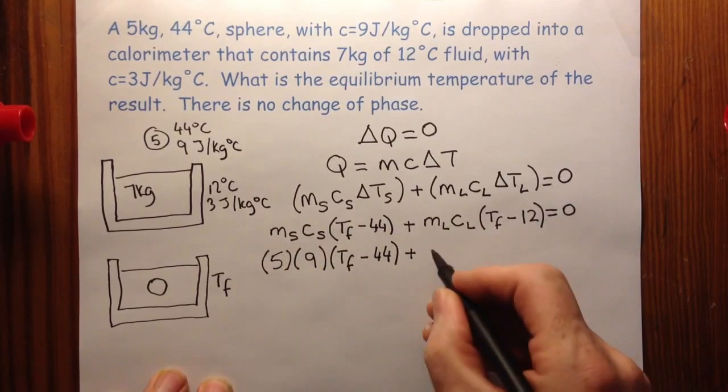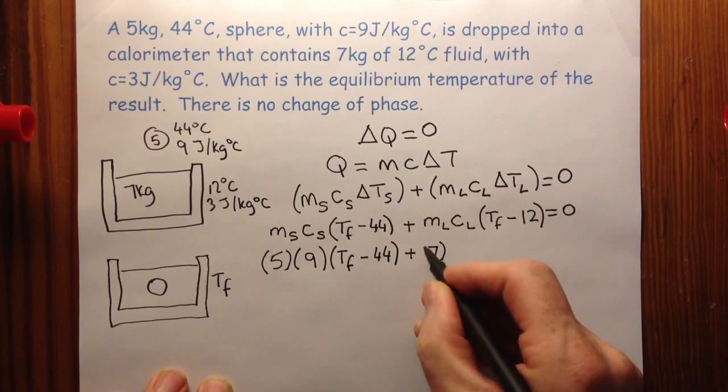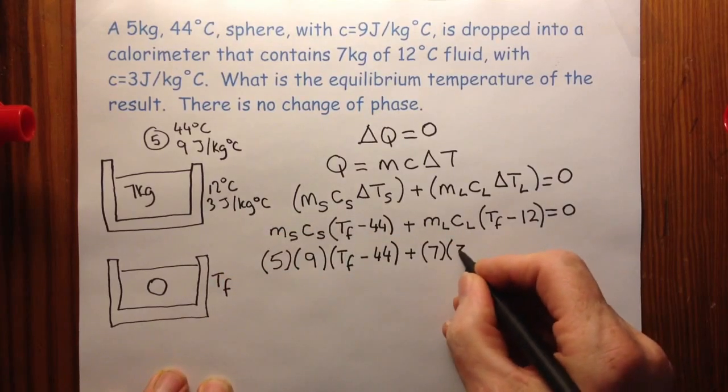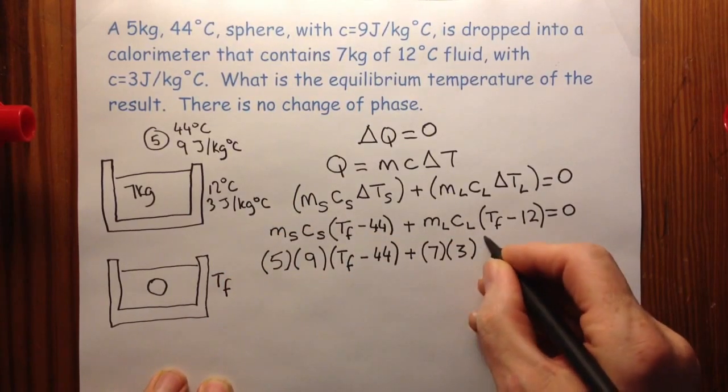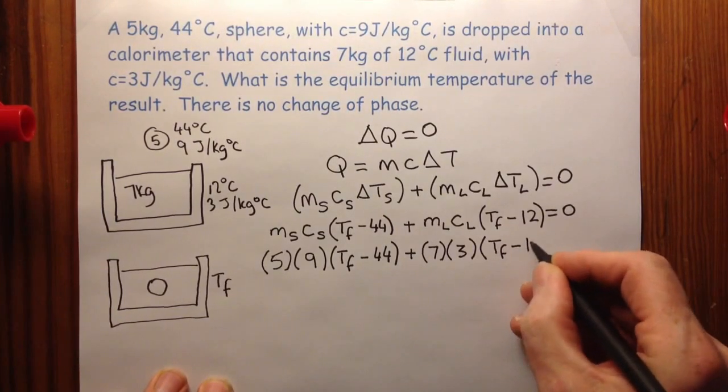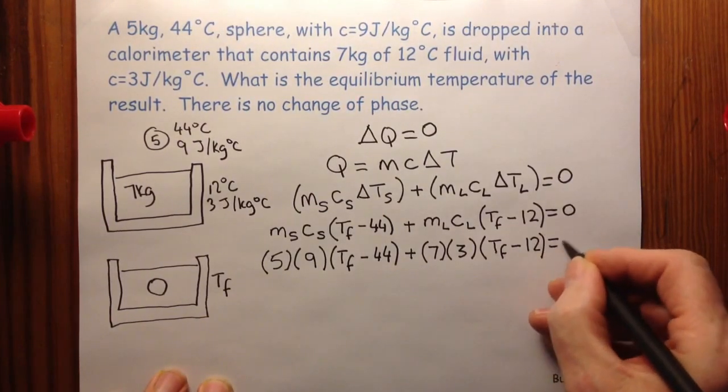The mass of the liquid was 7. The specific heat of the liquid is 3. The temperature change was T final minus 12. And all that equals zero.